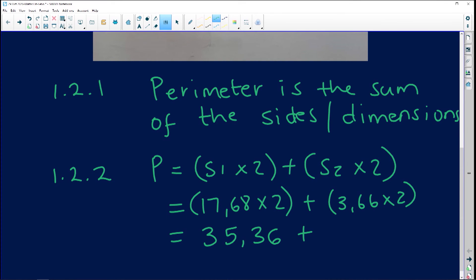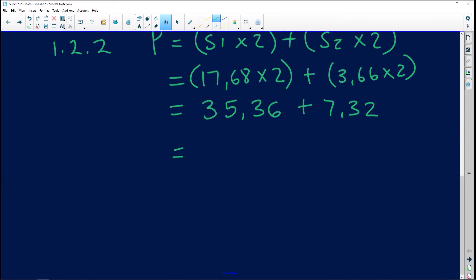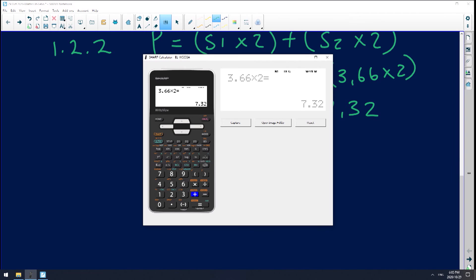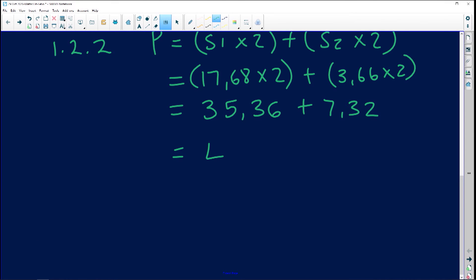So that's going to give us 35.36. 7.32. Now we go add those plus 35.36, which then gives us 42.68.